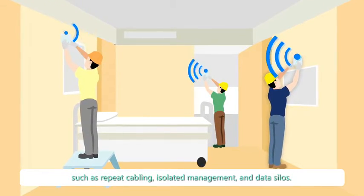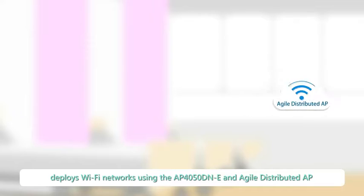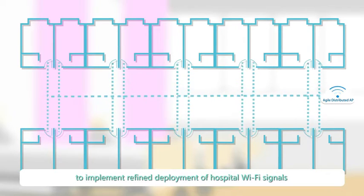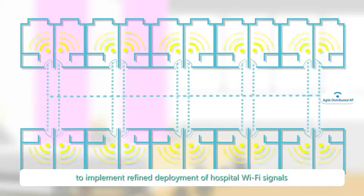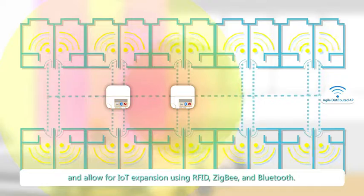Huawei Healthcare Wi-Fi IoT solution deploys Wi-Fi networks using the AP4050DNE and Agile distributed AP to implement refined deployment of hospital Wi-Fi signals and allow for IoT expansion using RFID, ZigBee, and Bluetooth.